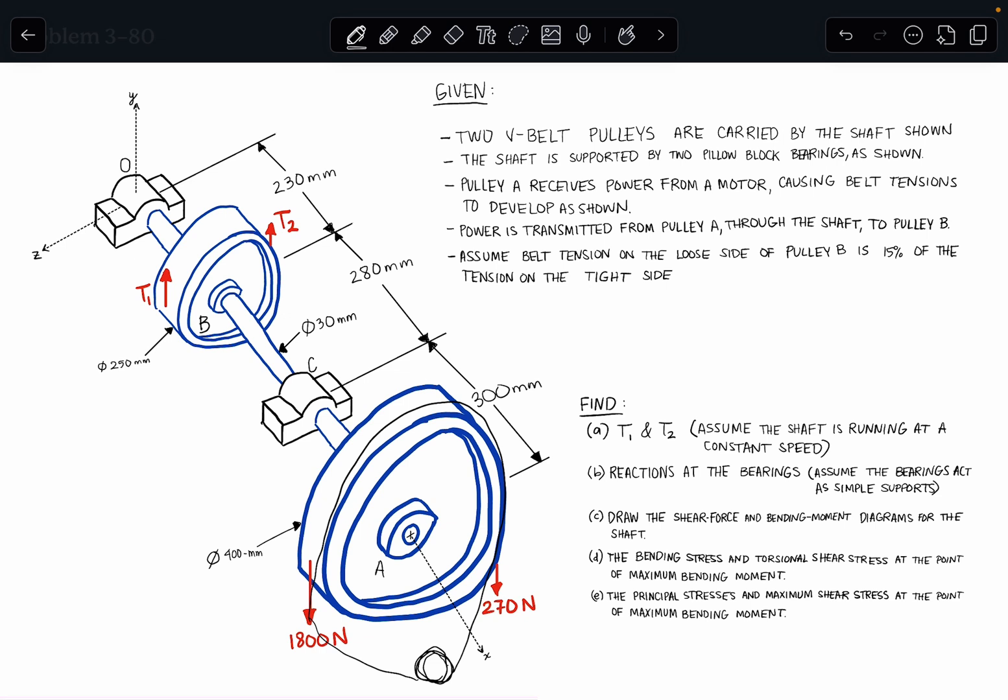And we can see that the tensions on the left side are greater than the tension on the right side, so that already gives me a good idea that the rotation of the motor is going in this direction, right? It's pulling the belt on the left side that we see, and the right side has some tension in it, but much less than what's on the left.